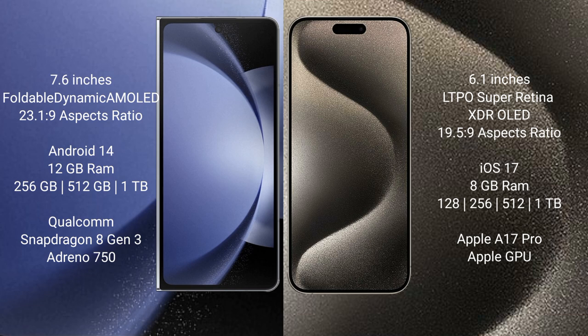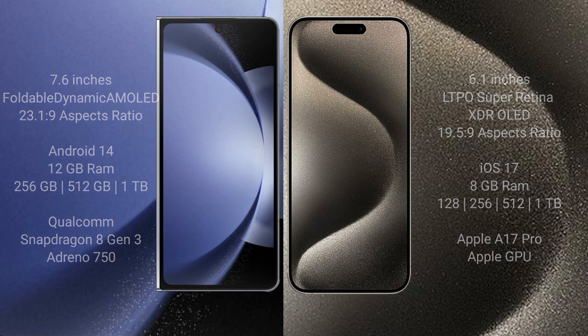iPhone 15 Pro comes with 8GB RAM and 128GB, 256GB, 512GB, or 1TB internal storage. It is powered by the Apple A17 Pro processor with Apple's custom GPU.